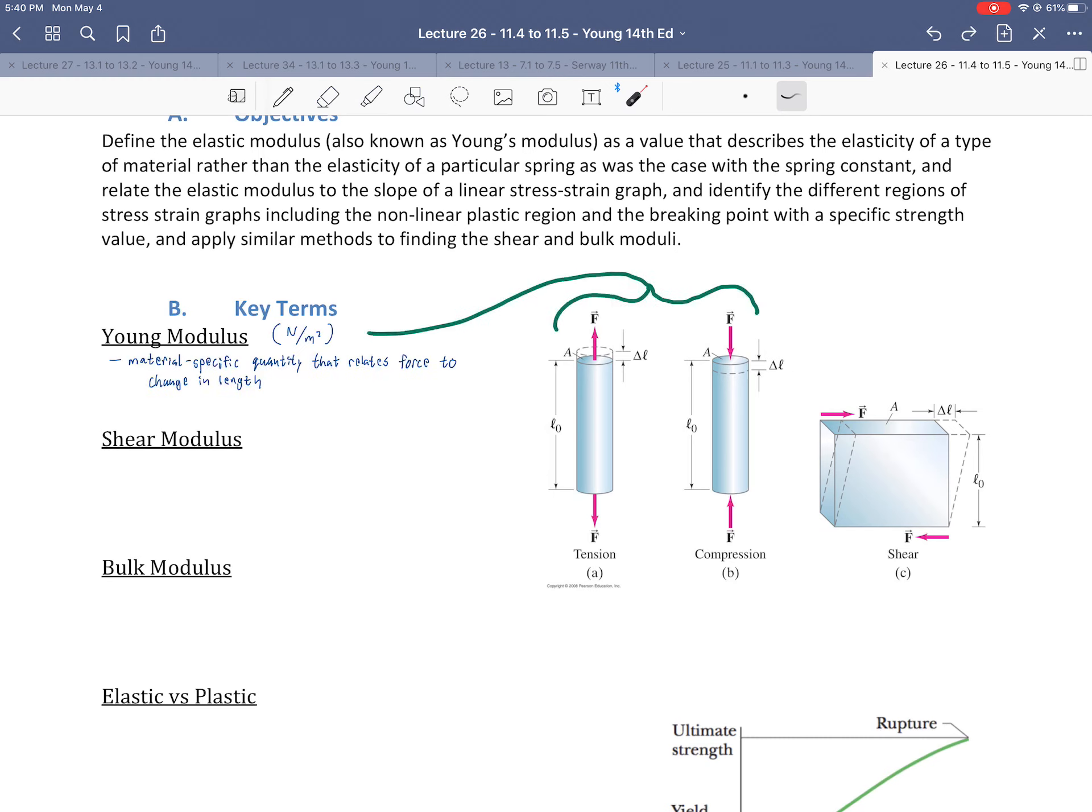Our first key term is the Young Modulus. What is the Young Modulus? It is a material-specific quantity that relates force to change in length. It is very similar to the spring constant, but unlike the spring constant, it's not specific to an individual spring. Every spring has its own spring constant, but the Young Modulus describes an entire material. For example, rubber would have a Young Modulus, or glass would have its own Young Modulus.